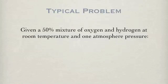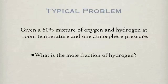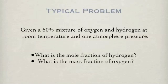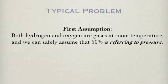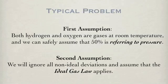For example, given a mixture of 50% oxygen and 50% hydrogen, what are the mole fractions and what are the mass fractions of the species? Of course, we have to make an assumption first — 50% of what? Since we are talking about two gaseous compounds at room temperature, we can safely assume that they are referring to partial pressure. The second assumption, used for computational convenience, is that the ideal gas law holds.